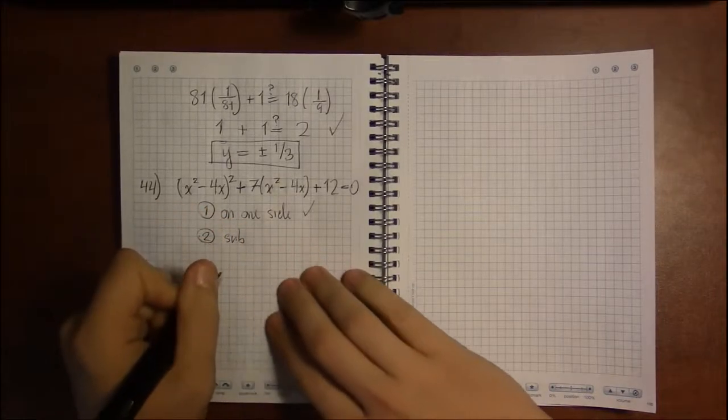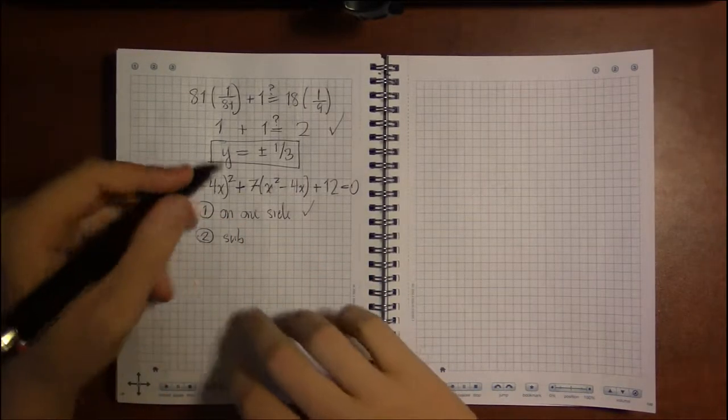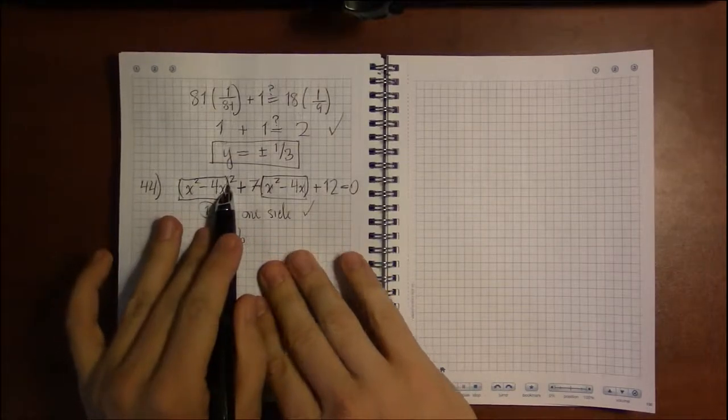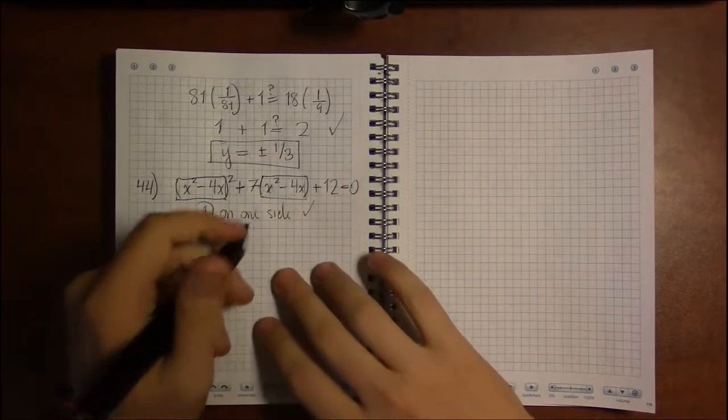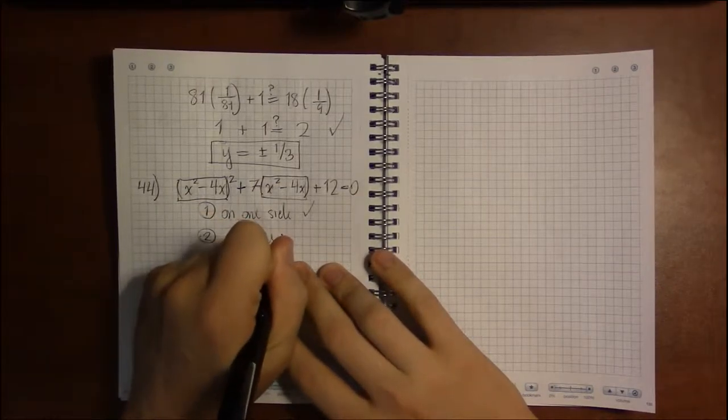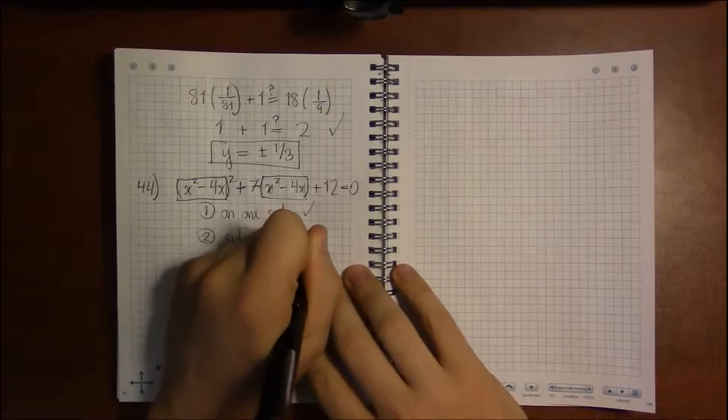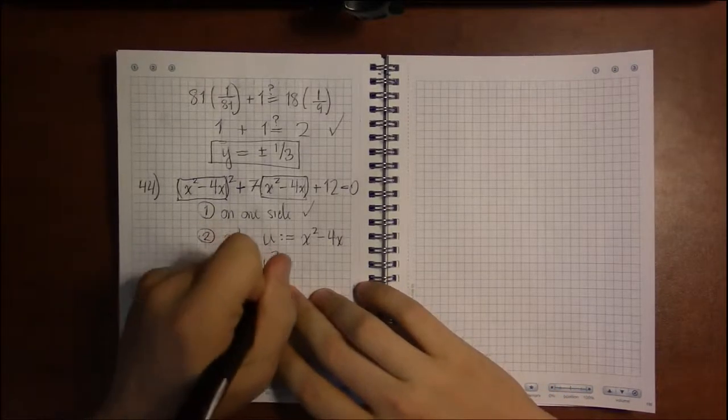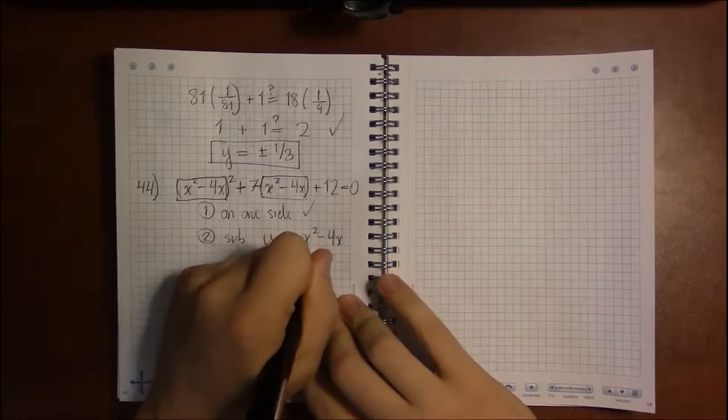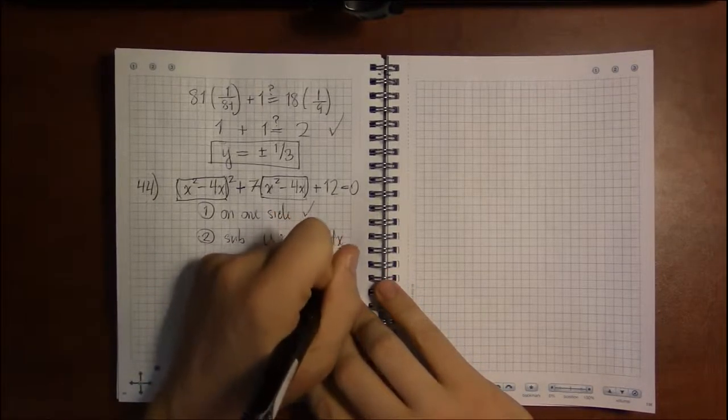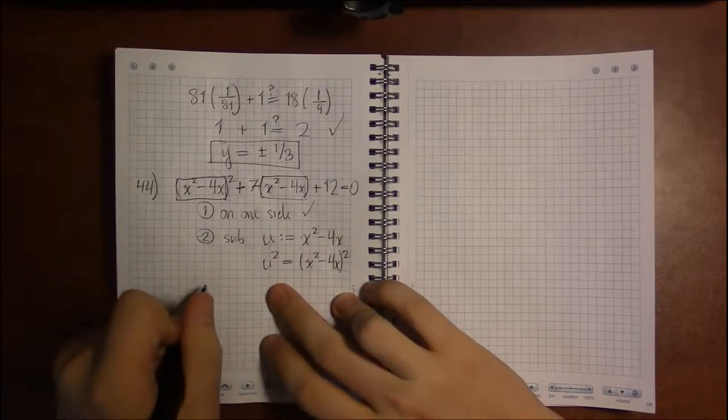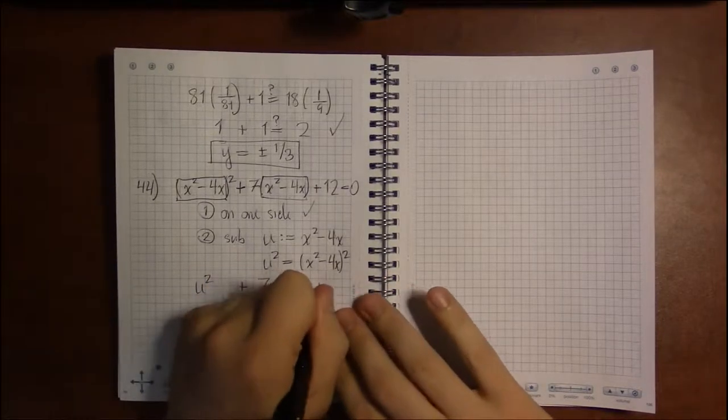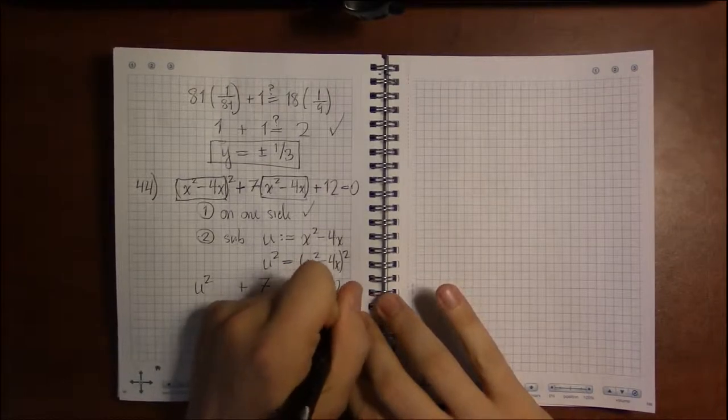Next, we need to substitute. And if you squint, what we're dealing with is something squared plus 7 times something plus 12. Our substitution should be u equals x squared minus 4x, because then u squared is just all this stuff squared, and we can then write our original equation as u squared plus 7u plus 12 equals 0.